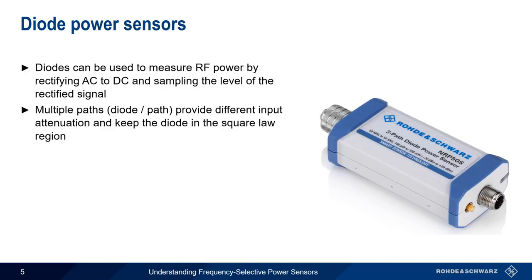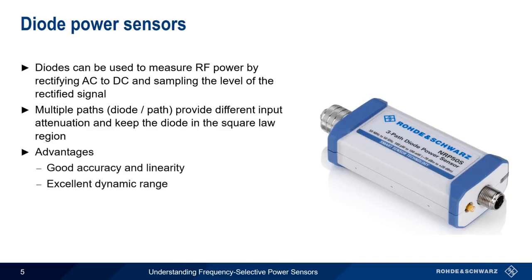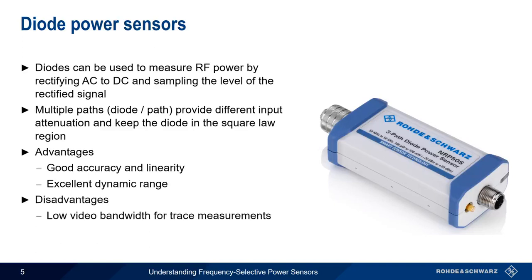Diode-based power sensor advantages include good accuracy and linearity, and an excellent dynamic range, especially when compared to thermal sensors. The main disadvantage of diode sensors is that their low video bandwidth makes trace measurements difficult.